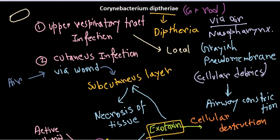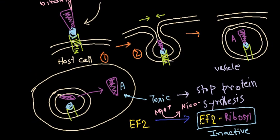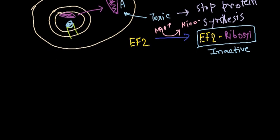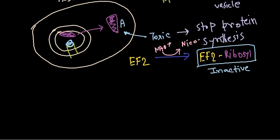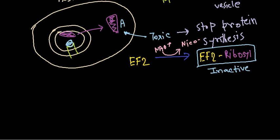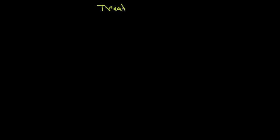The toxin is used for cell destruction in both upper respiratory tract infections and subcutaneous infections. Treatment for Corynebacterium diphtheriae is divided into two segments: the first is neutralization of the toxin, and the second is killing or removal of the bacteria.